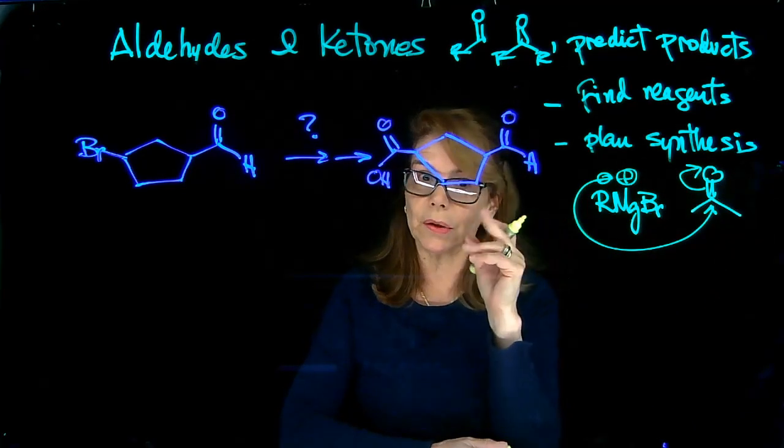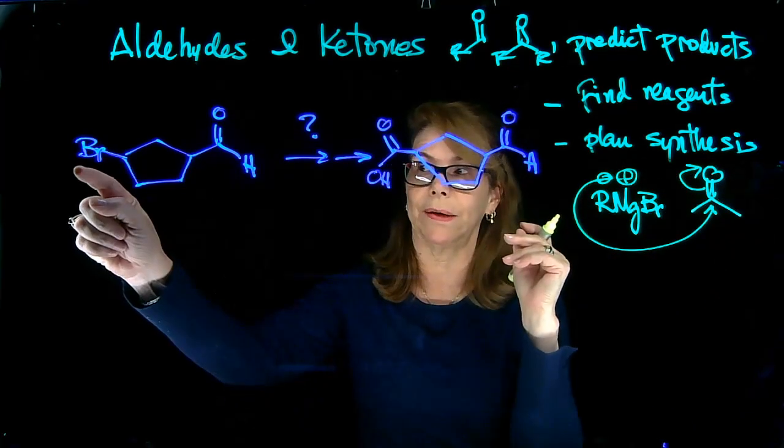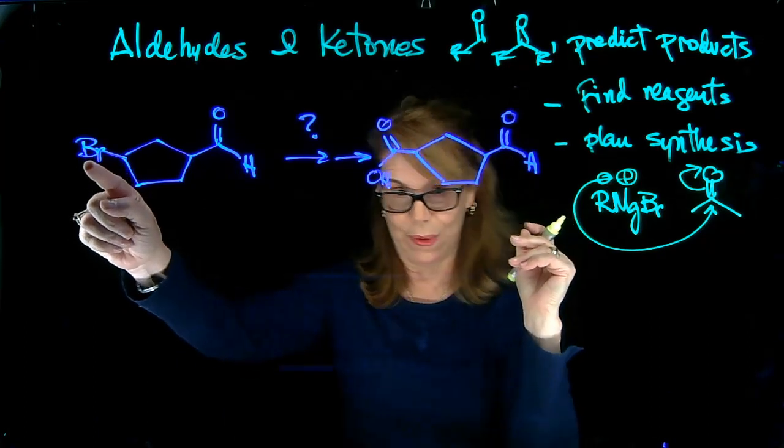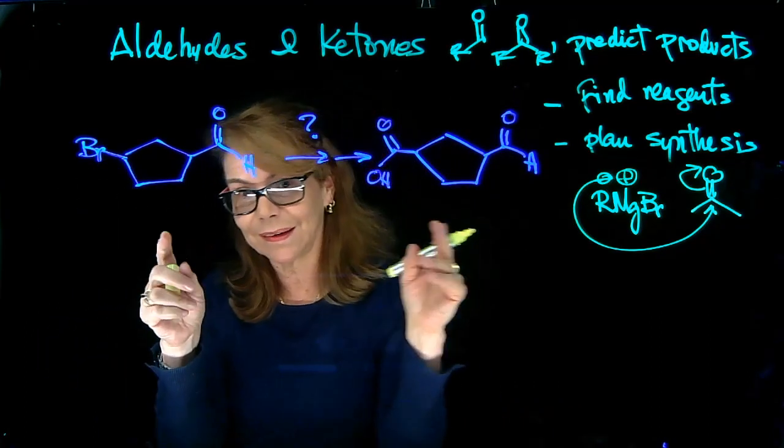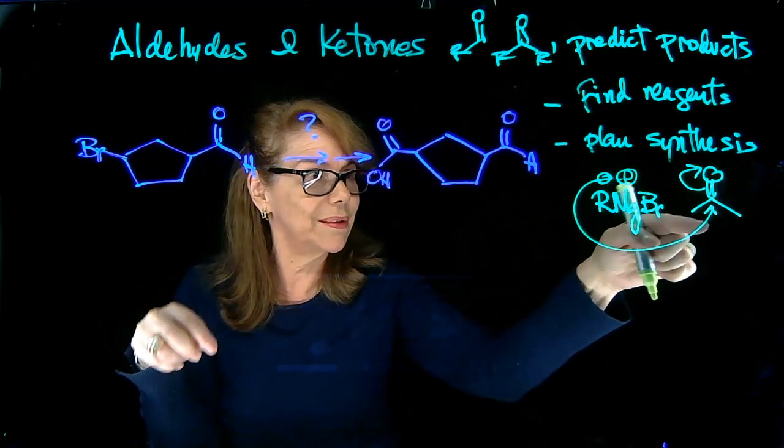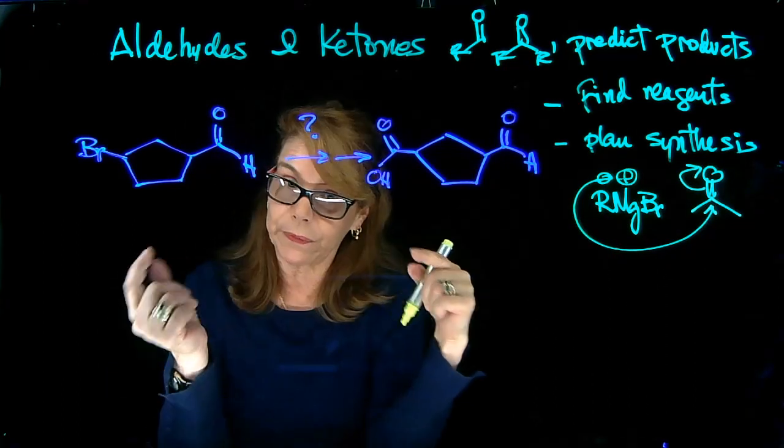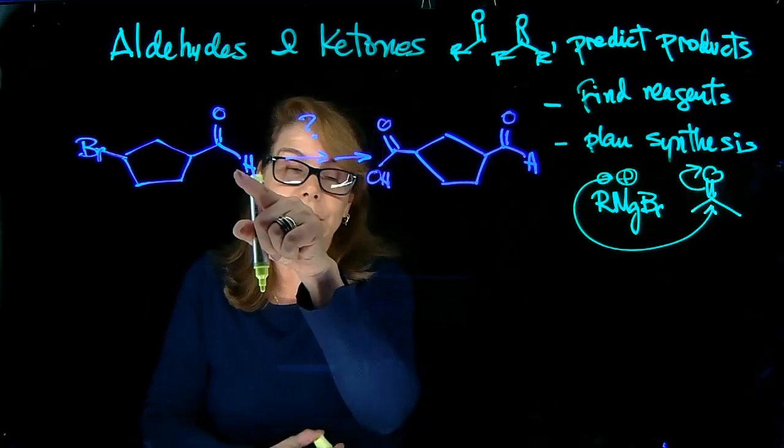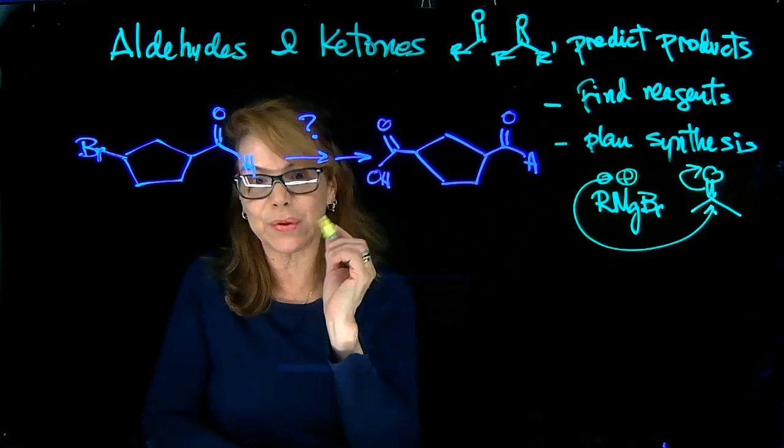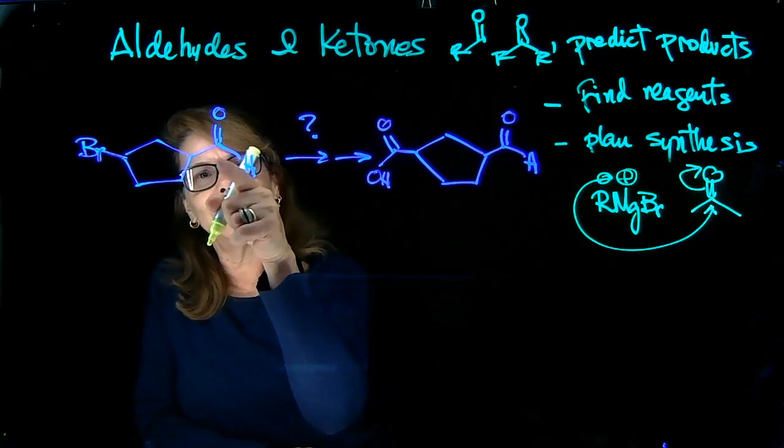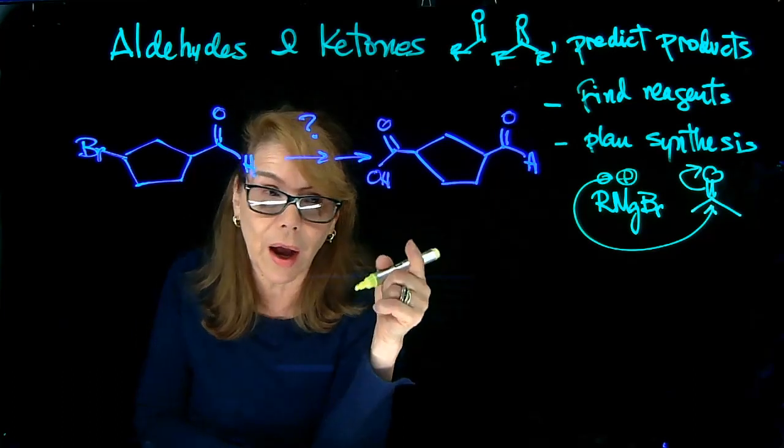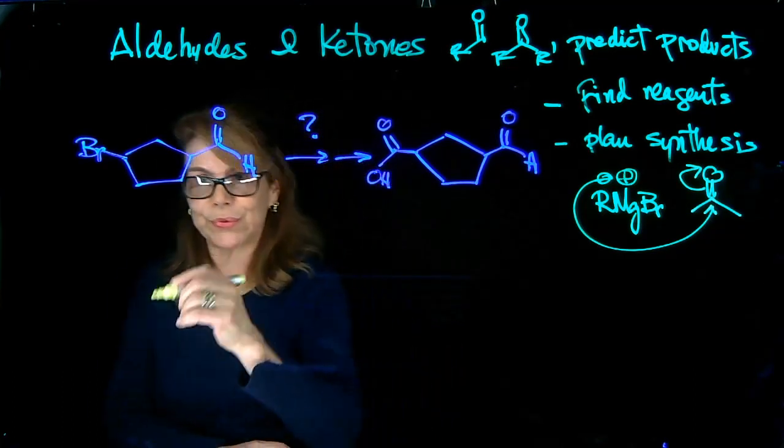But I cannot use Grignard, make a Grignard here with magnesium, because that could attack another molecule of the same, can't do that. So to prevent that from happening, I need to protect this functional group. So the first step that I'm going to do is protect that and then figure out how I'm going to introduce that.